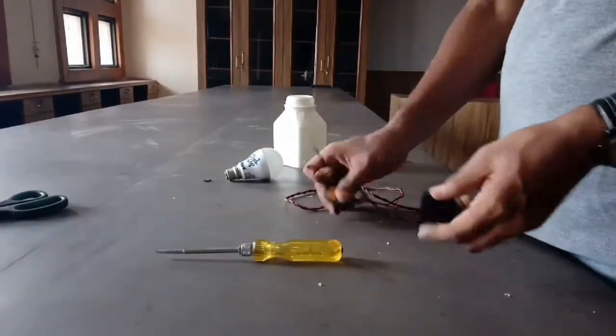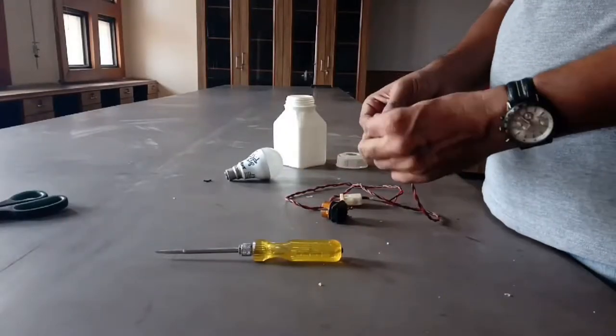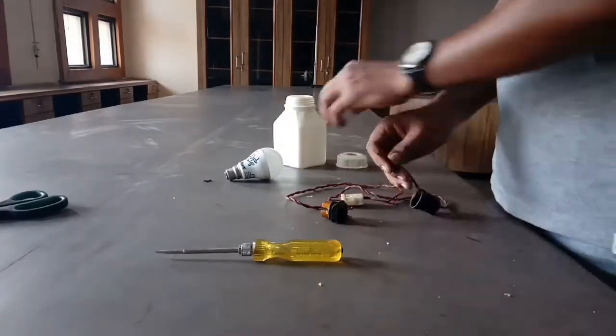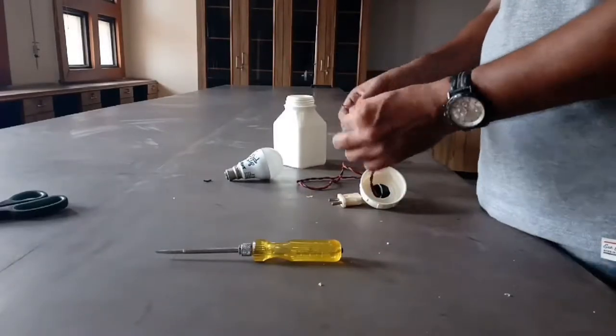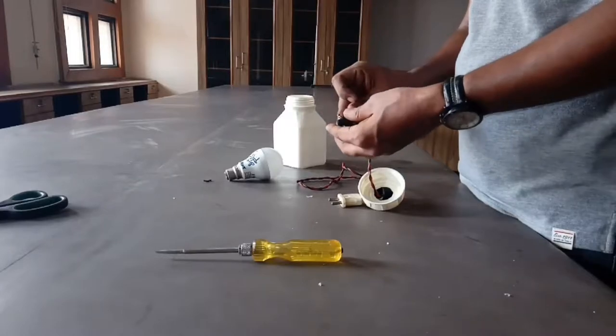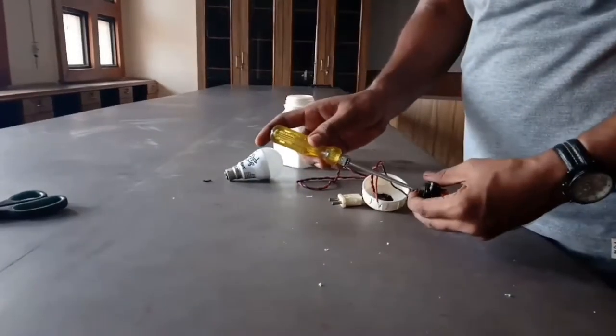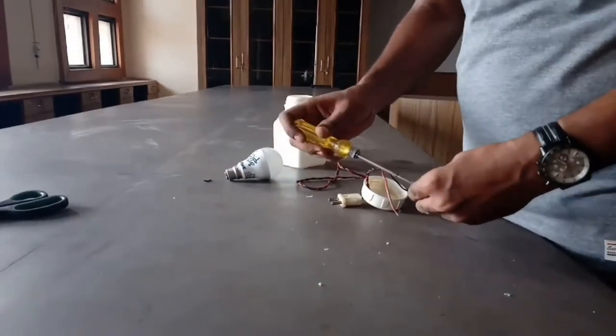Now take the bulb, bulb holder and the wire, and fit the bulb holder in the cap. Make the connections of the wire to the bulb holder.